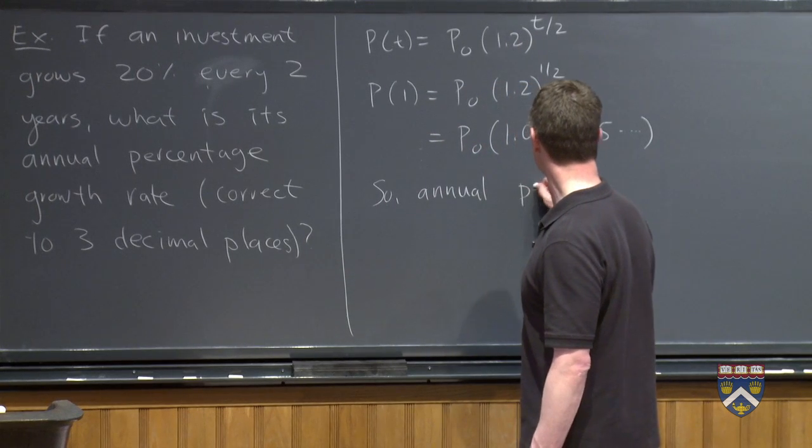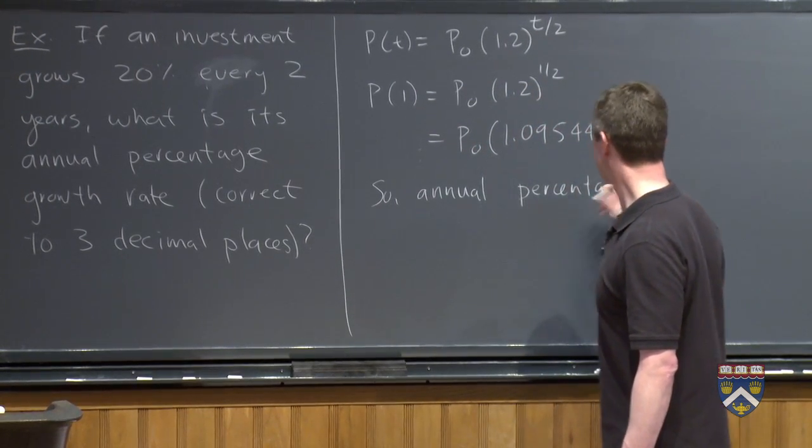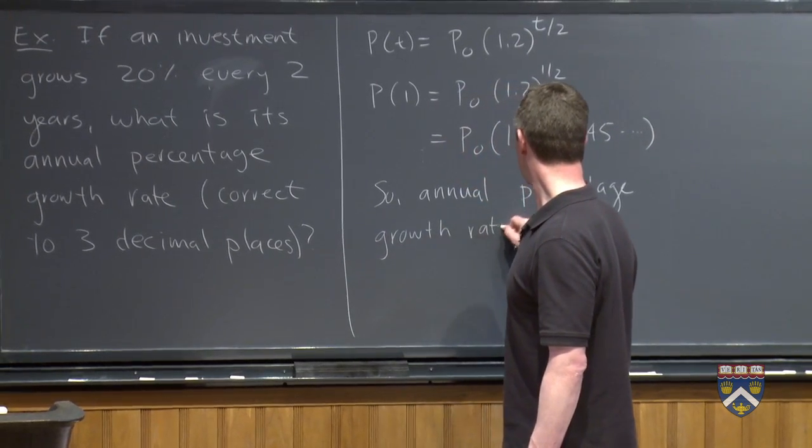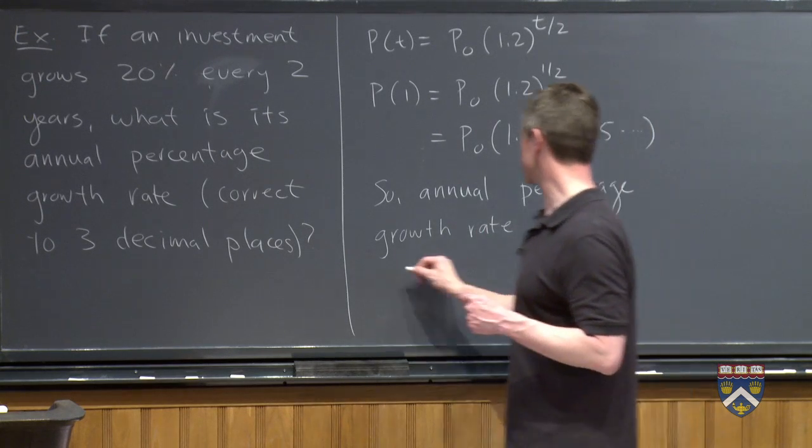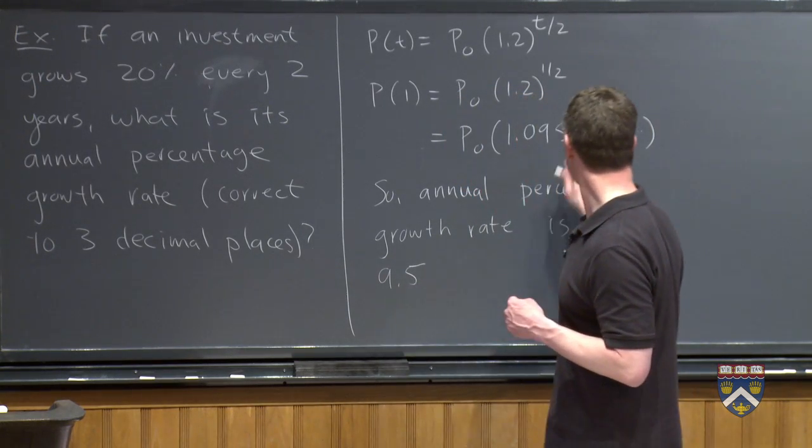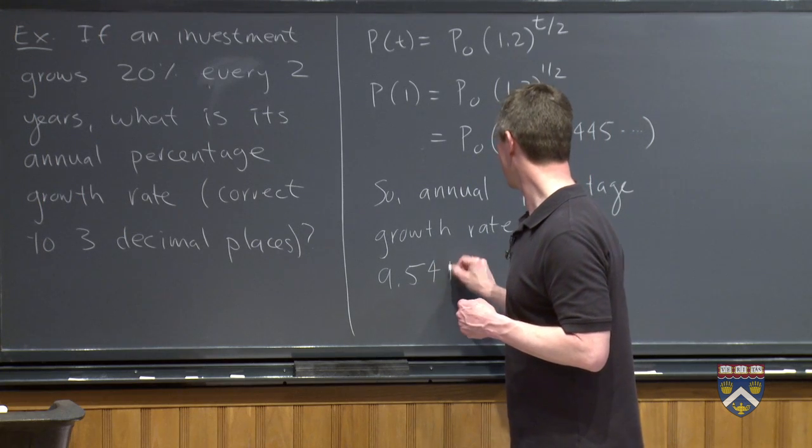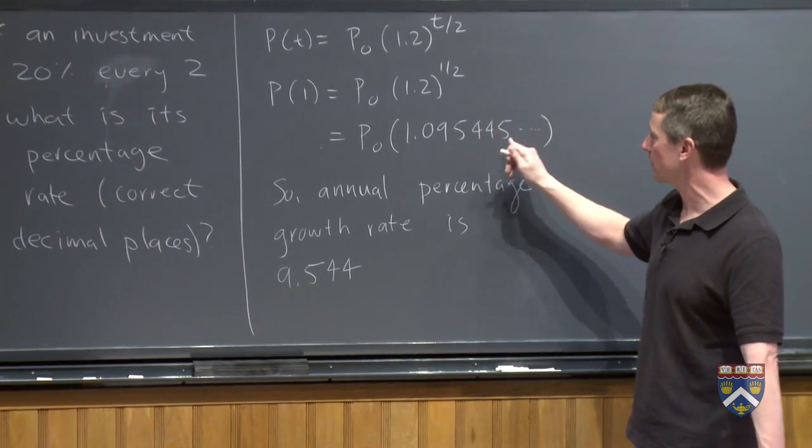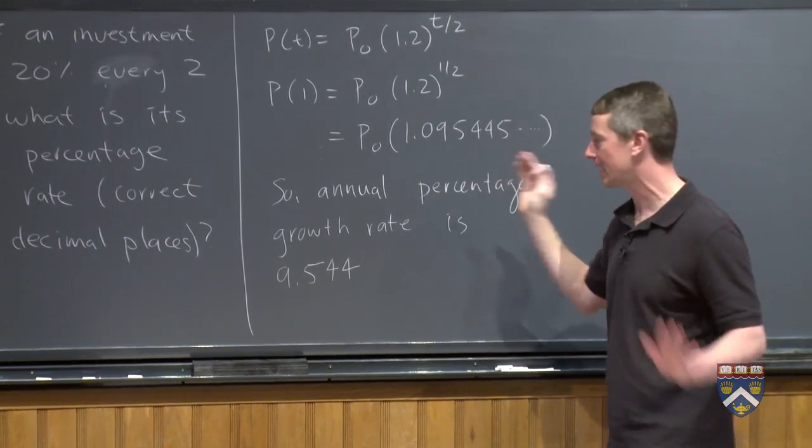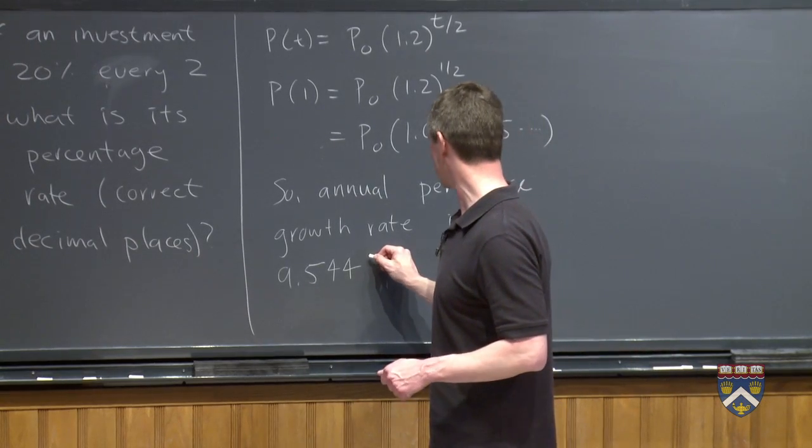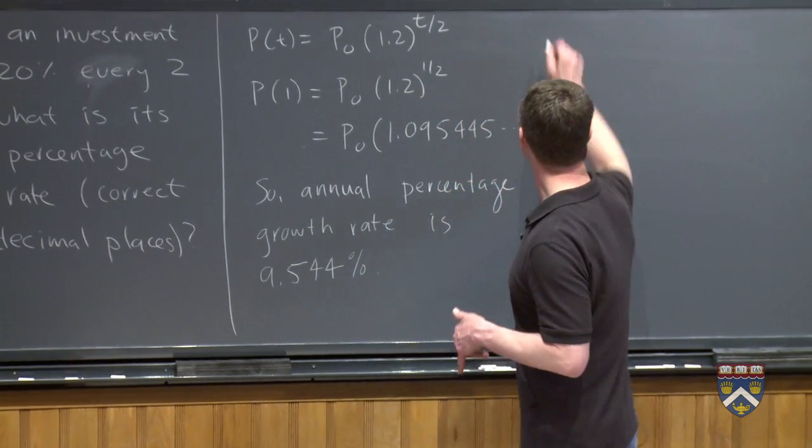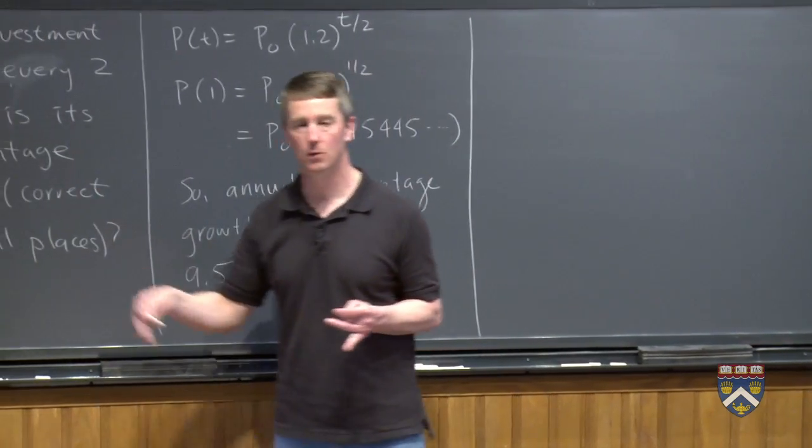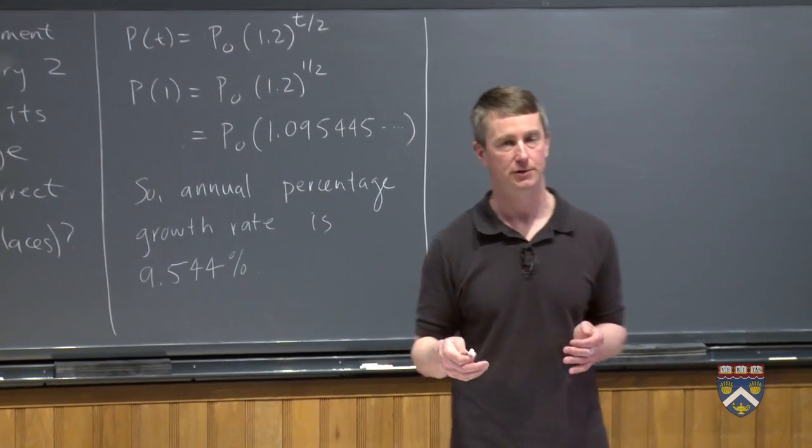So the annual percentage growth rate is, and it asks us to give it to three decimal places, so 9.544. And we don't care if you round or truncate, so if you want to just cut it off there and say 9.544, or if you see this 5 there and you say, oh, I should round this up to a 5, doesn't matter. Annual percentage growth rate is this. And that's in keeping with what we expected. We thought that the rate should be a little bit less than 10% because 10% a year would give us 21% in two years due to the compounding.